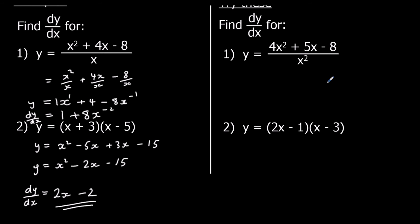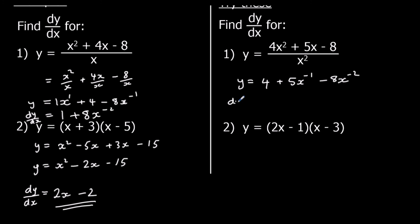Two for you to try — pause the video and give these a go. For question one, we need to divide each term by x squared before we can differentiate. So 4x squared over x squared is 4. 5x over x squared is 5x to the power of negative one, since dividing means we take away the powers — 1 take away 2 is negative one. And negative 8 over x squared is negative 8x to the power of negative two. The 4 is a horizontal line — it has no gradient.